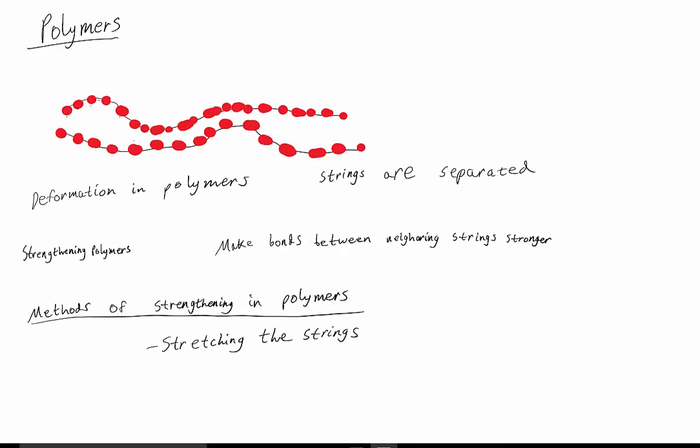The third material we're going to talk about is polymers. Polymers are made up of many little repeat units, shown by these little red circles on my paper. They are connected to each other, and they form big strings. There's many strings that all form a big clump together.